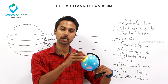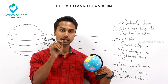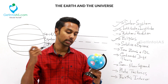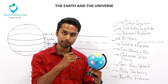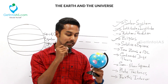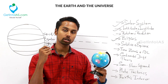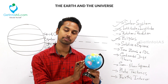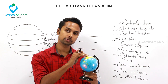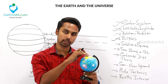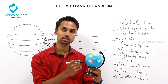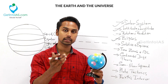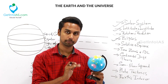The northern hemisphere will experience the longest day and shortest night during northern solstice. During southern solstice, the sun's rays fall on the Tropic of Capricorn. Since it is falling on the Tropic of Capricorn, the southern hemisphere will experience summer and the northern hemisphere will experience winter. During southern solstice, the southern hemisphere will experience the longest day and the shortest night.